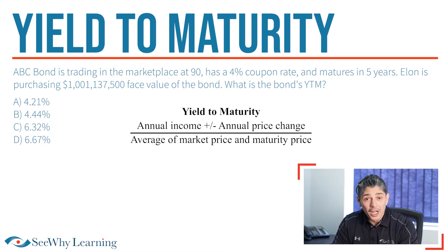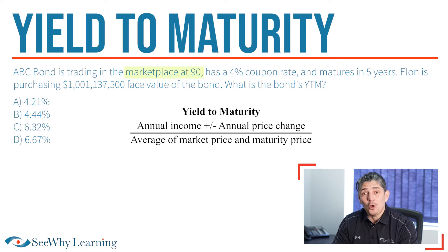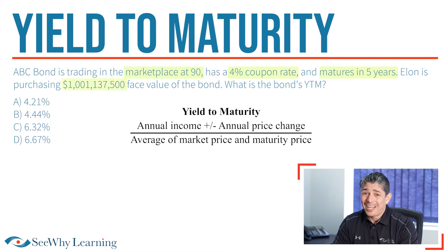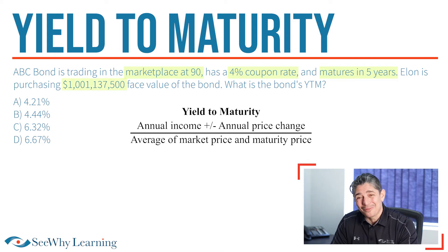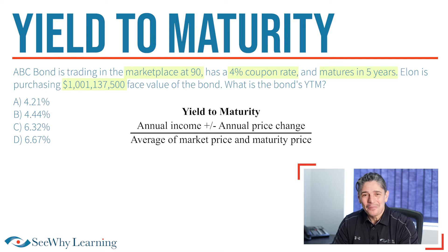ABC Bond is trading in the marketplace at 90 and has a 4% coupon rate and matures in 5 years. Elon is purchasing a heck of a lot — I'm not even sure what that number is, a billion something — face value of the bond. What is the bond's YTM?